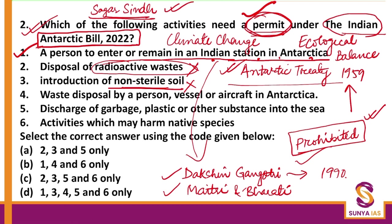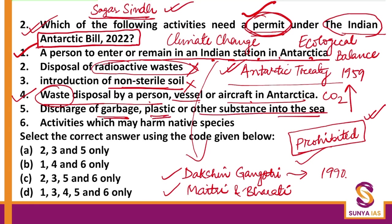You have to develop your analytical skills — what could be permitted and what could be prohibited. Waste disposal by a person, vessel or aircraft in Antarctica — this is normal waste like carbon dioxide, carbon dumping — can be done with permission. Discharge of garbage, plastic or other substances into the sea — totally prohibited. Activities which may harm native species — with permission for research and development purposes. Therefore the correct answer should be 1, 4 and 6, option B.